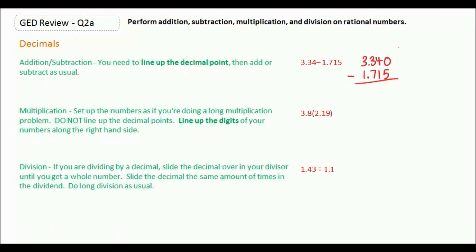And now we can subtract. We can't do zero minus five, so we need to borrow. So the four becomes a three, and our zero becomes a ten. Ten minus five is five. Three minus one is two.